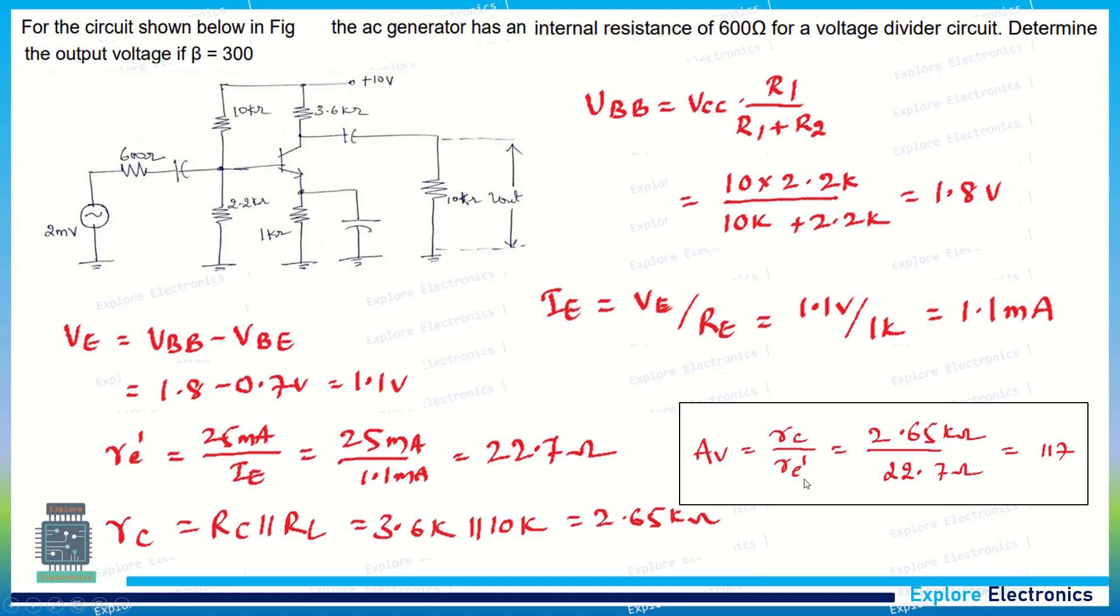Now to get the gain Av equal to RC divided by re', we need to calculate re' using 25 millivolts divided by the current flowing through the emitter. To get the value for IE, we require VE. VE is not given in the problem, so we need to calculate VE by using VBB and VBE.